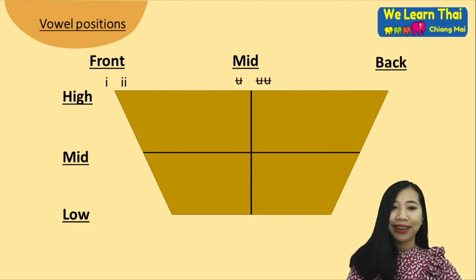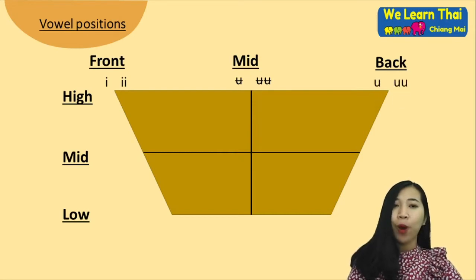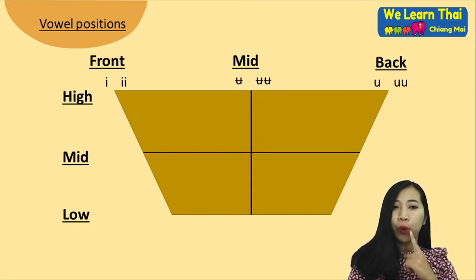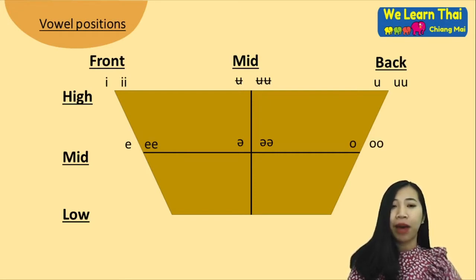Next one: 'ue' — the mouth is spread out and smiling, like 'ue'. Next one: 'u' — the tongue is in the back and the mouth is a little bit circular, like 'u'. Next we have 'e', 'ue', 'o'. For 'o', the mouth is a big circle and the tongue is always in the back, like 'o'.